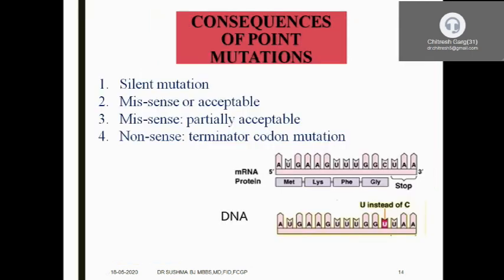Now, what happens with point mutation or frameshift mutation? There is something called silent mutation — even though the mutation is present, there is no disease manifestation. Then there is missense but acceptable mutation — some missense is happening but the patient can still live. Missense but partially acceptable — not completely acceptable, but not incompatible with life. The severity depends on the amount of chain damage. Then there is the nonsense mutation — nonsense codons appear and terminate synthesis prematurely.